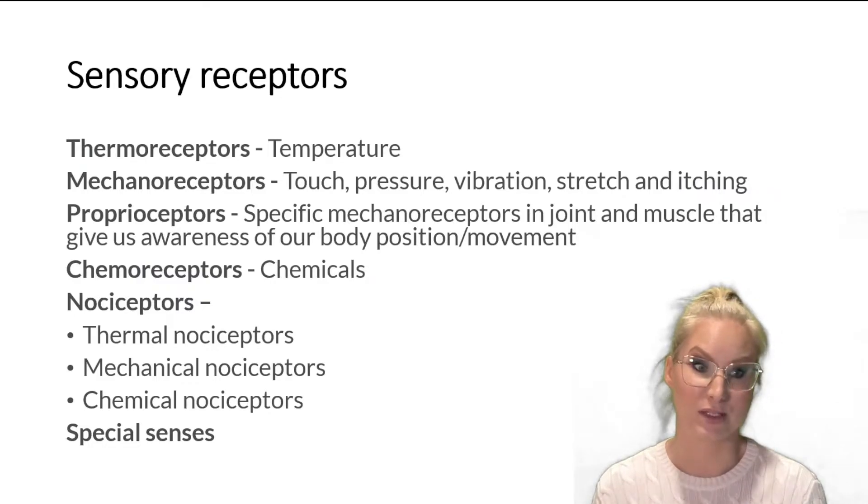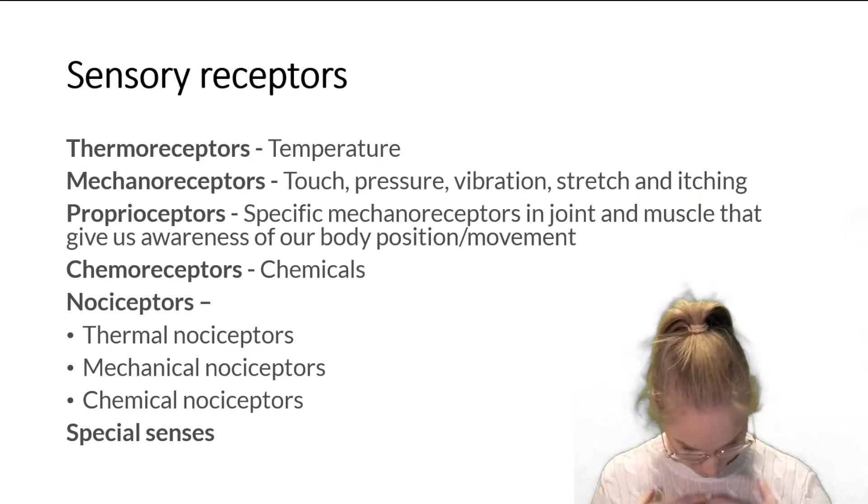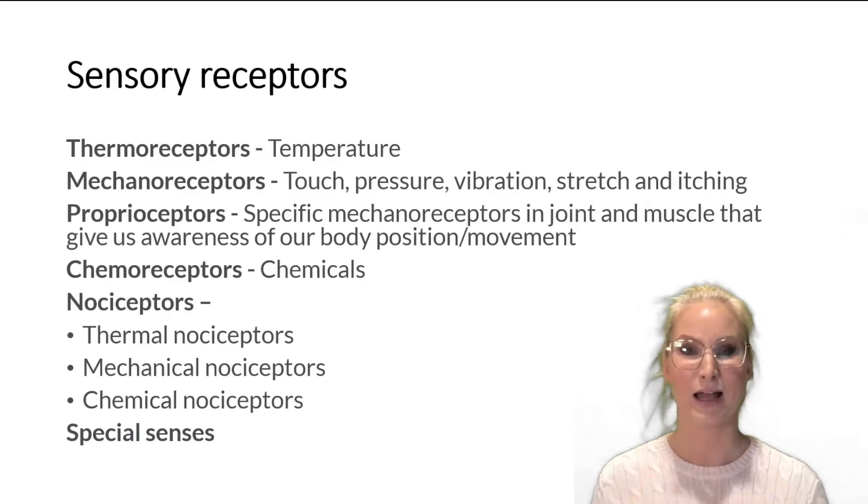And proprioceptors, they're a very specific type of mechanoreceptors. And they're basically located in joints or in muscles. And they give us a sense of awareness of our body position. So, for example, the fact that I could just put my hand on my chest is because of proprioception. I didn't actually have to look to make sure I put it there. I just had a sense of how my body was and where my body was that I was able to do that. So that's proprioception in action.